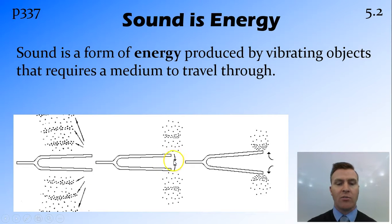As the tuning fork moves in, it creates a region around it where there aren't very many air particles, and we call this a rarefaction. When it moves out, it squishes these air particles together, and we call this a compression.